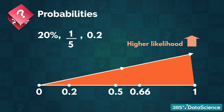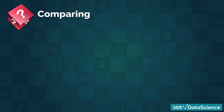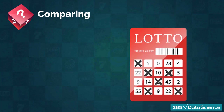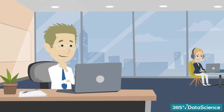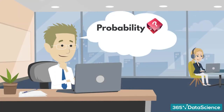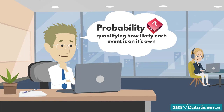Even without knowing any of this, you can tell some events are more likely than others. For instance, your chance of winning the lottery isn't as great as winning a coin toss. That's why you can think of probability as a field that is about quantifying exactly how likely each of those events are on their own. And that's what this course is going to teach you. So, how about we start right away? Let's get into it.